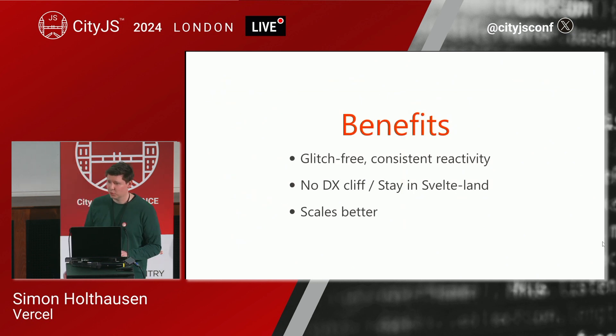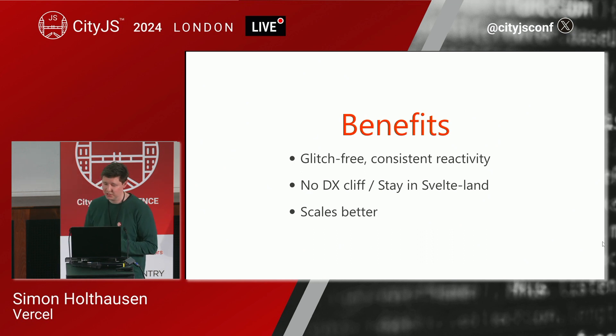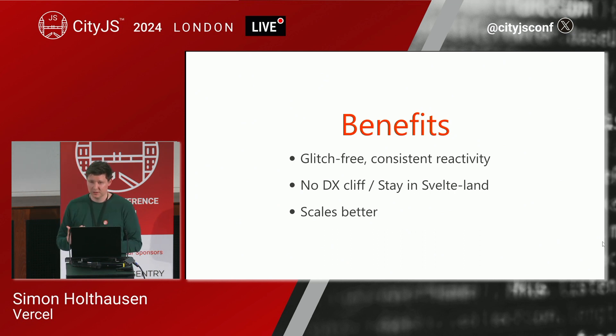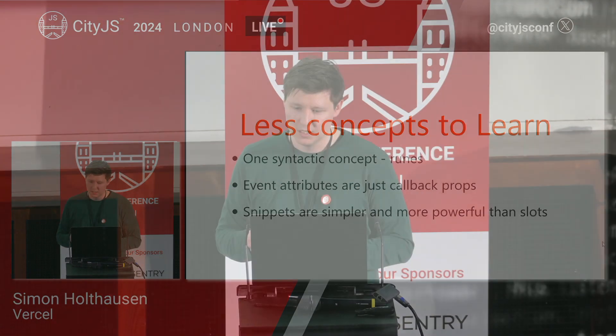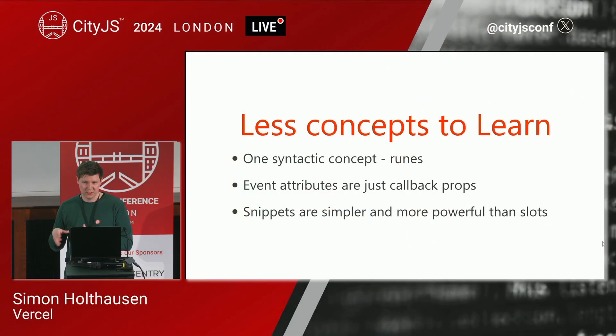We believe that Svelte 5 is a big step forward for Svelte. The new APIs allow you to write glitch-free, consistent reactive code no matter where you are in your application. You can now stay in Svelte land and don't have to switch to stores when you want to extract logic into functions. The generated code also scales better — it's faster than Svelte 4, and the bundle size doesn't grow as much as before. We've reduced the number of concepts you need to learn: runes are syntactically one concept unlocking universal reactivity, event attributes replace the on: syntax and are just properties, so we don't need custom events anymore — just use callback properties. Instead of slots, we now have snippets which are simpler and more powerful.